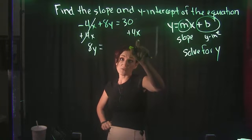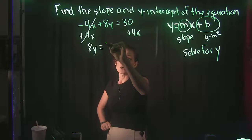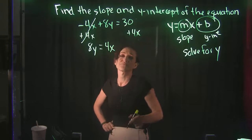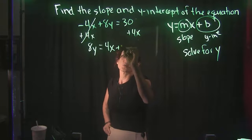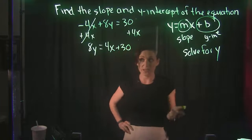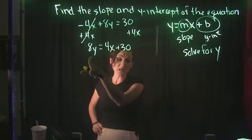This x term is positive, right, because we said plus 4x. So when I drop it down, it's going to be a positive 4x. And then this 30 that we have over here is also positive. So when I drop it down, I'm going to say plus 30, which means we almost have this solved for y.